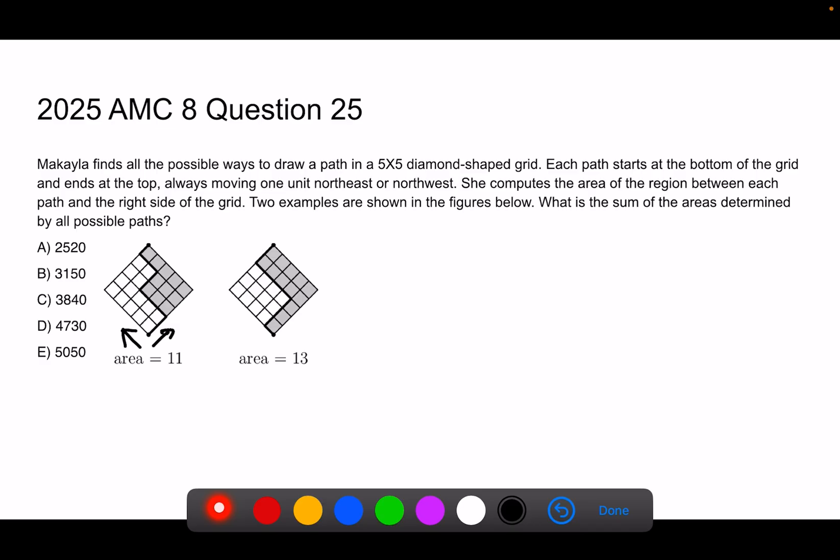And same thing, this one is 5 plus 8, which is 13. Now this question is saying, if you take all the possible paths and the corresponding areas, what is the sum of all those areas?